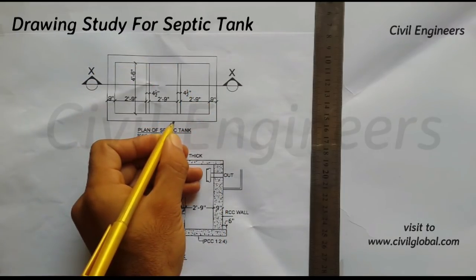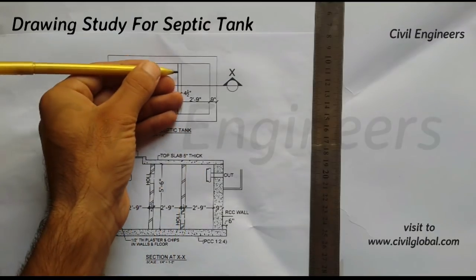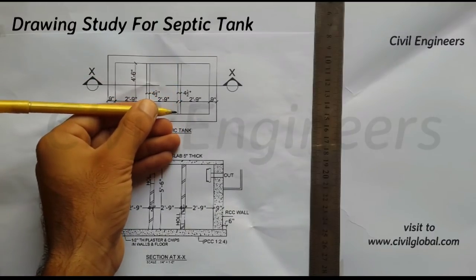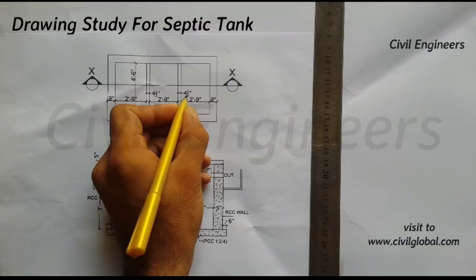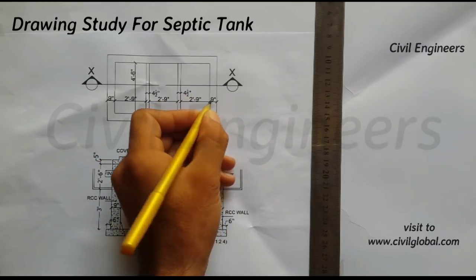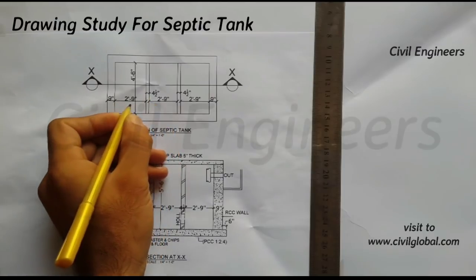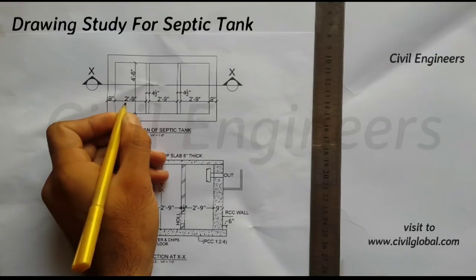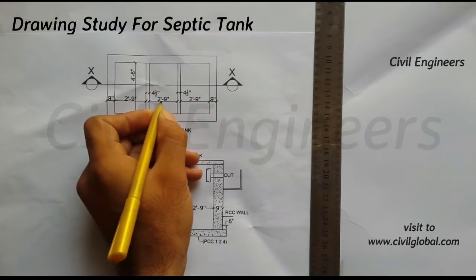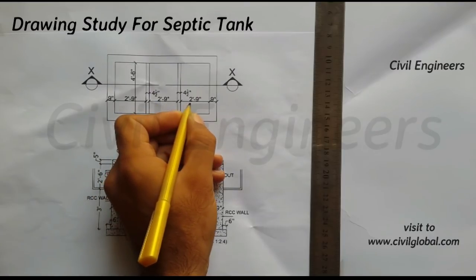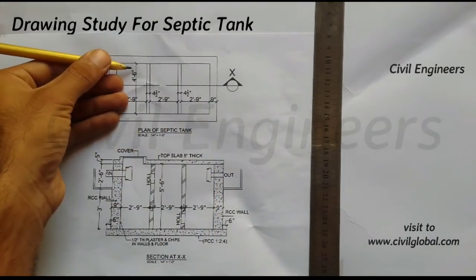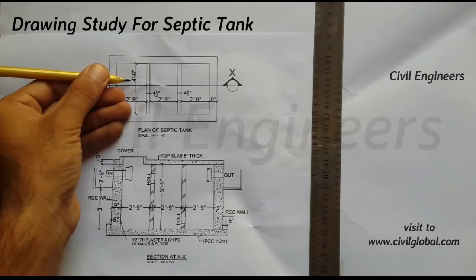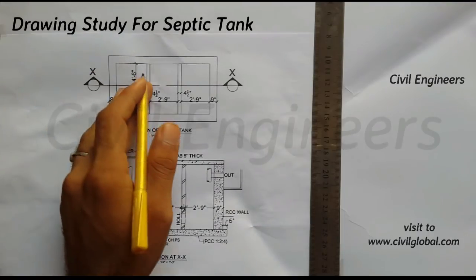This side is 9 inches and this side is 9 inches. The internal walls which are constructed inside the shifting tank are 4.5 inches — half of the external walls — this one is also 4.5 inches. We have three sections here; the length of each section is 2 feet 9 inches, and the internal length of the shifting tank without the boundary wall is 4 feet 6 inches.